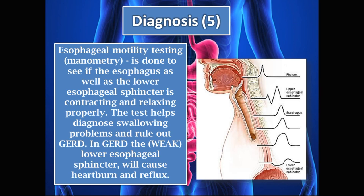In GERD, the weak lower esophageal sphincter causes heartburn and reflux. Because the LES doesn't contract properly, it allows acid to escape the stomach and enter the esophagus. On the manometry tracing on the right-hand side, the amplitude of the waves at the lower esophageal sphincter will be reduced, demonstrating a weak lower esophageal sphincter contraction.